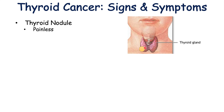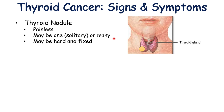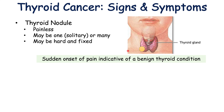The thyroid nodule in cancer is going to be painless — if a patient were to touch that lump, there's not going to be any pain. The patient may have one solitary nodule or many little nodules, and it could be hard and fixed, meaning it doesn't move around. An important point: if there is sudden onset of pain from the thyroid nodule, that is more indicative of a benign thyroid condition, like a cyst that has hemorrhaged.